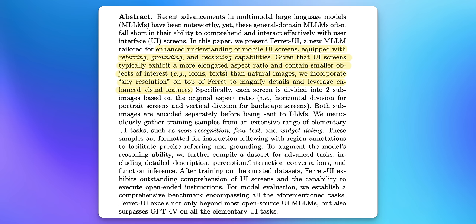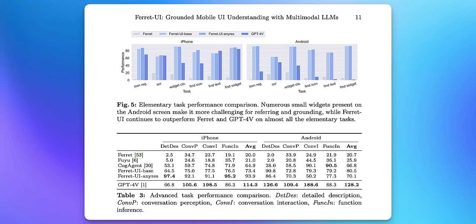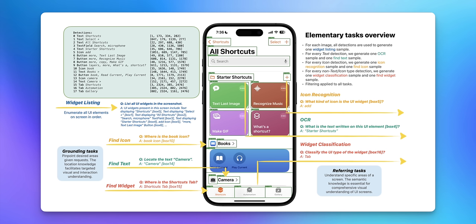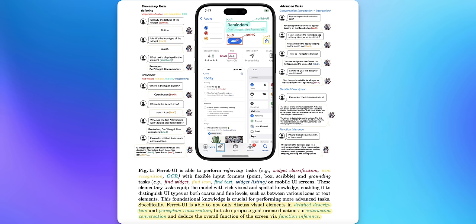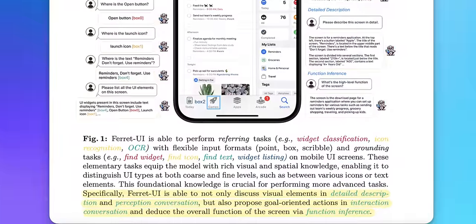Ferret UI is trained to recognize the different elements of a user's home screen, such as app icons and small text. In this research paper, Apple says they compared Ferret UI to GPT-4V, which is OpenAI's MLLM, in public benchmarks, and it quote 'excels not only beyond most open source UI MLLMs, but also surpasses GPT-4V on all of the elementary UI tasks.' They show examples of the Ferret UI model in action — it shows everything the model can read and understand without any text or voice inputs, just reading tasks from the screen.